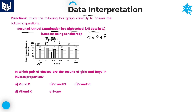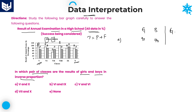Now look at the first question: In which pair of classes are the results of boys and girls in reverse proportion? Let us go with option A — class 5 and class 10. In class 5, boys are 90 and girls are 70. For the condition to be satisfied, in class 10, girls should be 70 and boys should be 90.